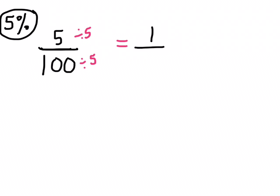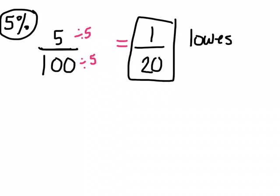What's 5 divided by 5? And 100 divided by 5? 20. Can I reduce this any more? No, this is lowest terms, good.